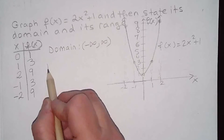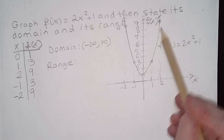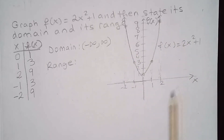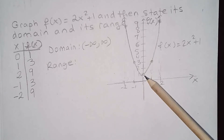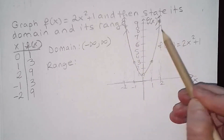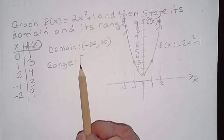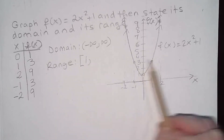Now the range is the set of all values that f can take. You notice the graph is a parabola that opens upward, so the smallest value of f is going to be one. There's no way to have a value of f less than one. Since it opens upward, it keeps going in that direction. So the range goes from one — and one is included — to infinity.